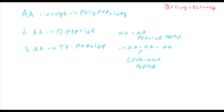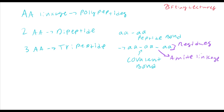You can say that a peptide bond is a covalent bond. Now another way to say this is that amino acids are also called residues. So amino acids, when they're linked together, are called residues. And actually this covalent bond is an amide linkage — you're linking the amide with the carboxyl group.